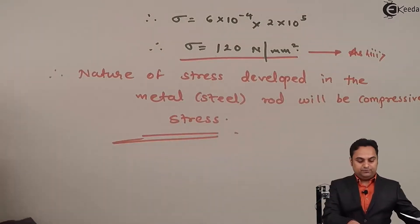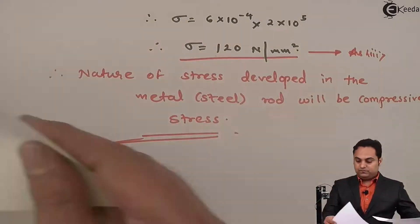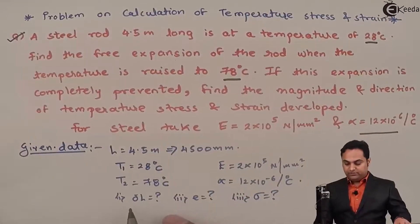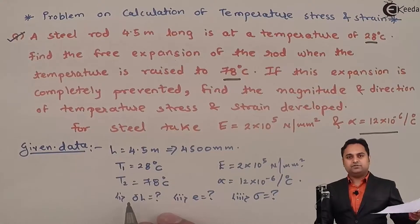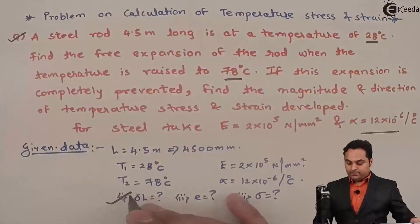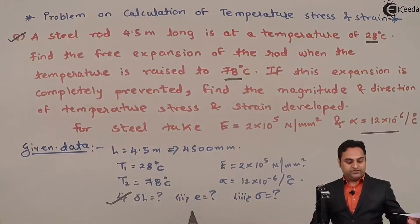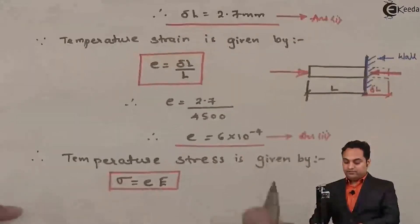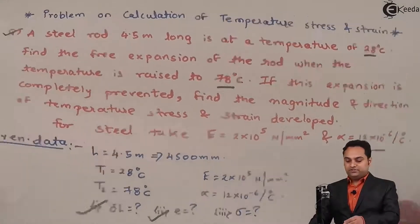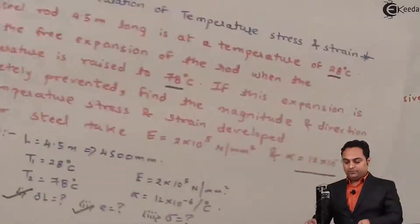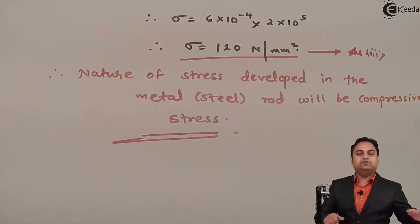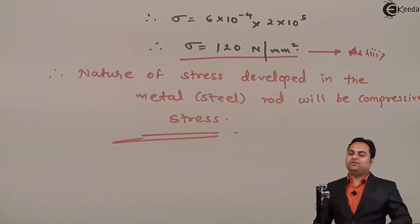To summarize this problem, there were three unknown values to calculate. First, free expansion = 2.7 mm. Second, thermal strain = 6×10⁻⁴. Third, thermal stress = 120 N/mm². Having calculated all these unknown values, the problem is completed.